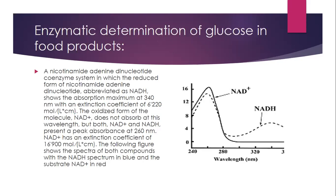Enzymatic determination of glucose in food products uses the nicotinamide adenine dinucleotide (NAD) coenzyme system. The reduced form, NADH, shows an absorption maximum at 340 nanometers with an extinction coefficient of 6220 mol⁻¹·L·cm⁻¹. The oxidized form, NAD⁺, does not absorb at this wavelength, but both NADH and NAD⁺ show a peak absorbance at 260 nanometers. The figure shows the spectra of both compounds, with NADH in blue and NAD⁺ in red.